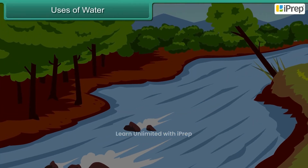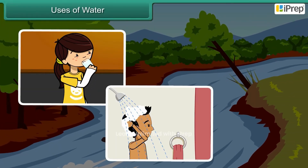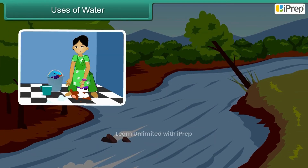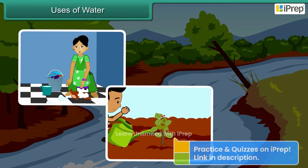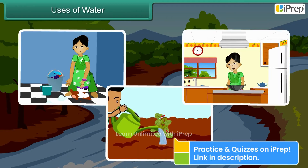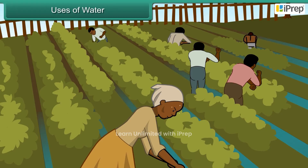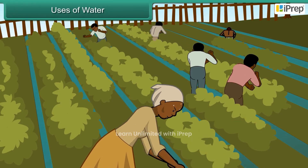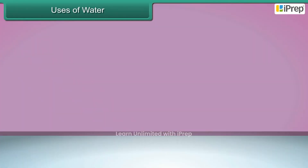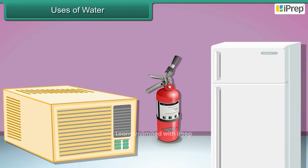We use water for drinking, bathing, cleaning, washing, watering the plants and cooking. We also use it to irrigate crops and lawns, to clean streets, and to operate air conditioning units and heating systems.